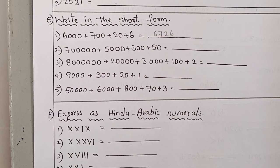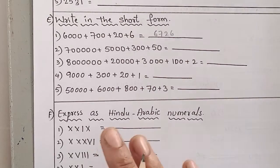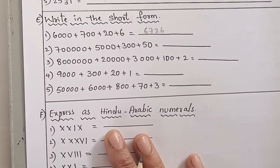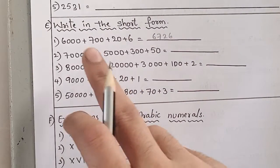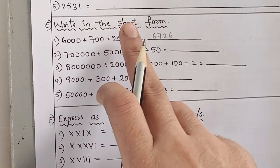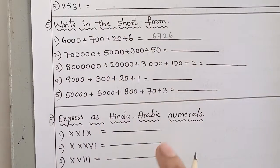In the previous class, we learned SA1 revision D bit. There are 4 bits: A, B, C, D. So today we are doing A bit, writing numbers in short form.